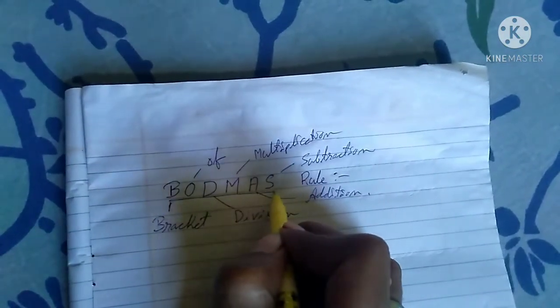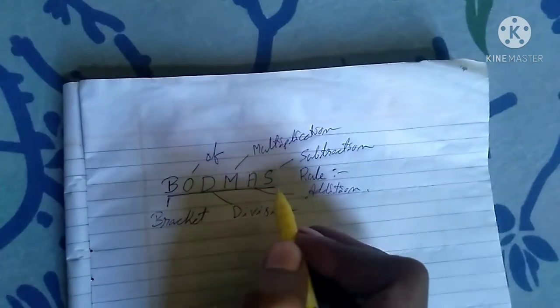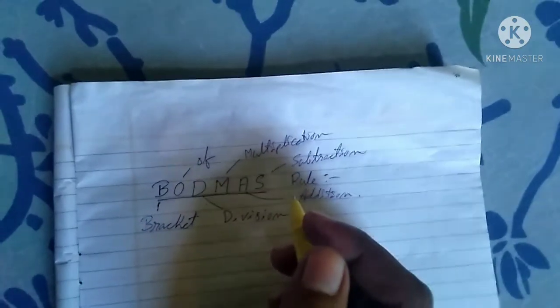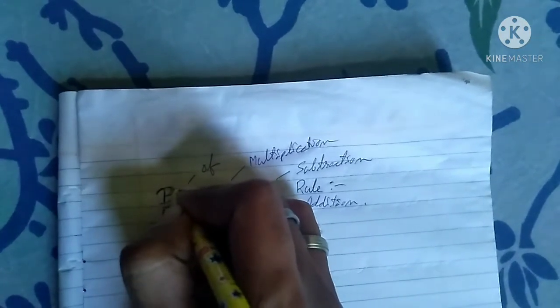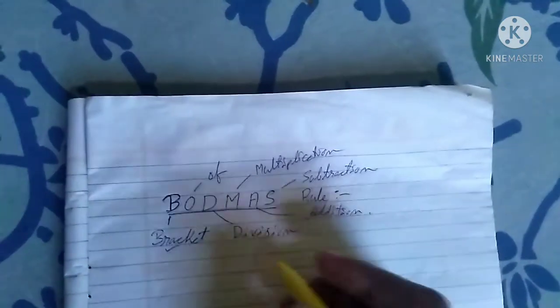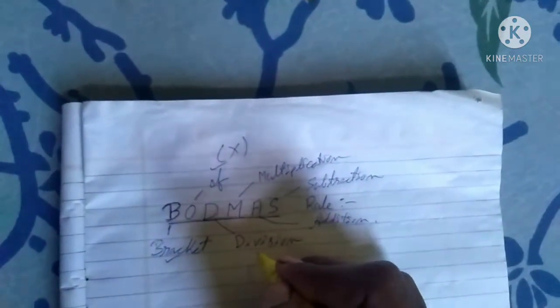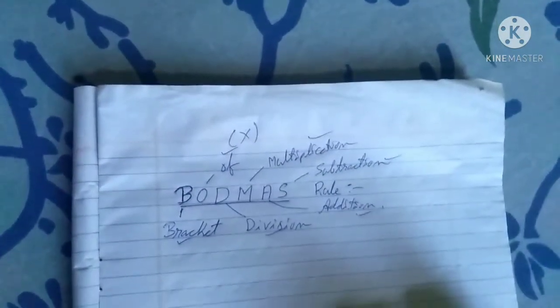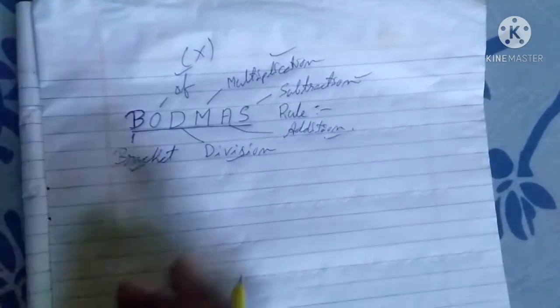The BODMAS rule is used while solving problems — expressions like simplify or long expressions. While solving the expression we have to follow the BODMAS rule: we solve the bracket portion first, then 'of' (which means multiply), next division, next multiplication, next addition, and lastly subtraction.